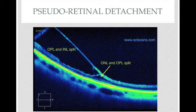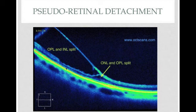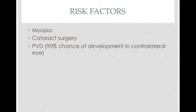The last type is pseudo-retinal detachment, where the entire retina is not pulled away — only some of the layers — which is peripheral senile retinoschisis, a splitting of the peripheral retina with an elevated retinal layer. Since the outer one-third of the cones supplied by the RPE is not pulled away, there is no ischemia and technically no true retinal detachment. Risk factors include myopia, cataract surgery, and posterior vitreous detachment (PVD); having PVD in one eye carries about a 90% chance of development in the opposite eye.